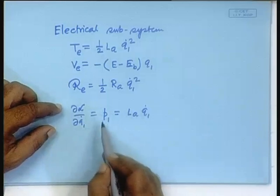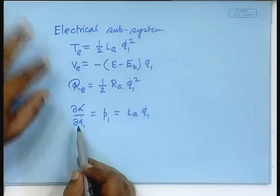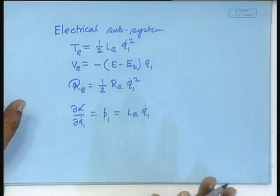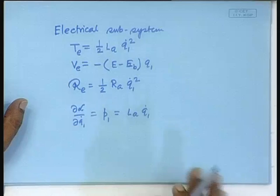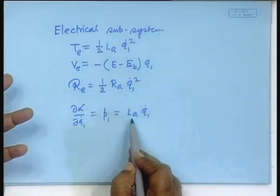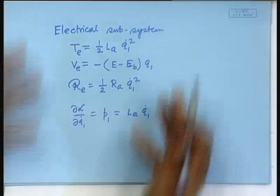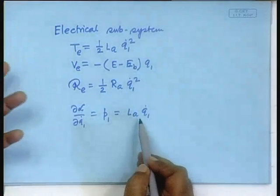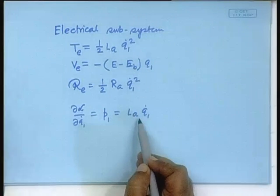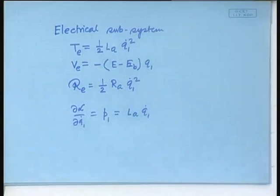P₁ is the derivative of only the Lagrangian — the Rayleigh term does not appear. So P₁ is nothing but the momentum. L is equivalent to the mass, Q₁-dot is equivalent to the velocity, so it is the electrical momentum.